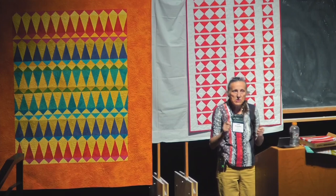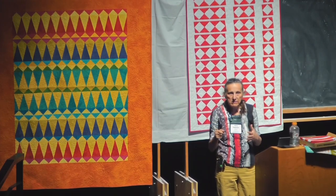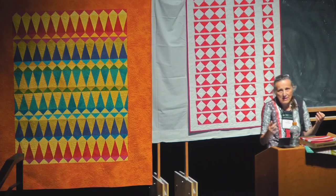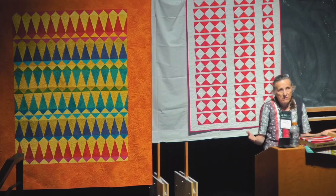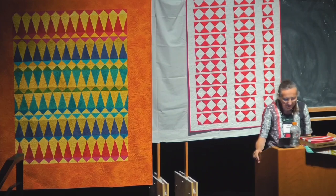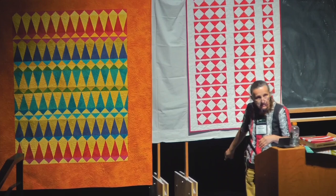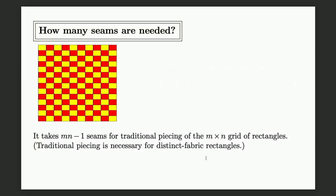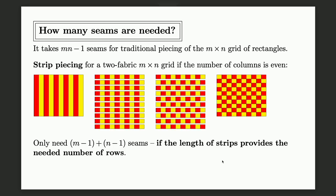The reason to minimize seams is that seam starting and seam stopping are prone to errors — there are two extreme events. In the middle, errors may still happen but are probably consistent and become a design choice. At the beginning and end, there are issues. Minimizing seams also means fewer flying pieces all over the room. With traditional piecing, m×n pieces require m×n−1 seams. If all pieces are different colors, you actually do need m×n−1 seams.